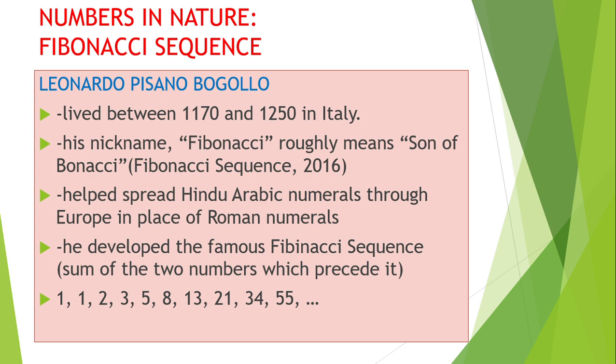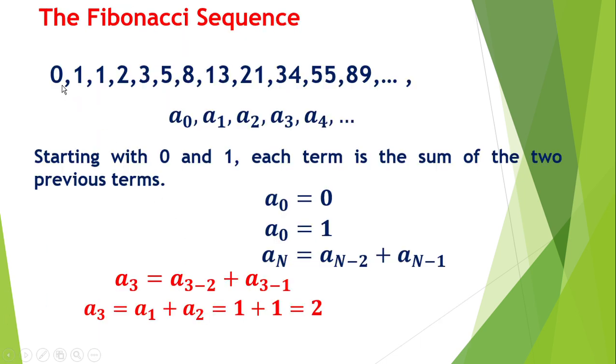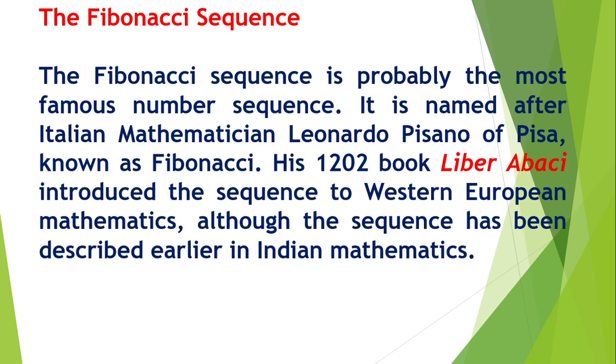After learning this Fibonacci sequence you will appreciate mathematics and then you will love it. The sequence is 0, 1, 1, 2, 3, 5, 8, which represents a₀, a₁, a₂, a₃, and so on. Starting with 0 and 1, each term is the sum of the two previous terms, which is aₙ = aₙ₋₂ + aₙ₋₁. For example, a₃ = a₁ + a₂ = 1 + 1 = 2.